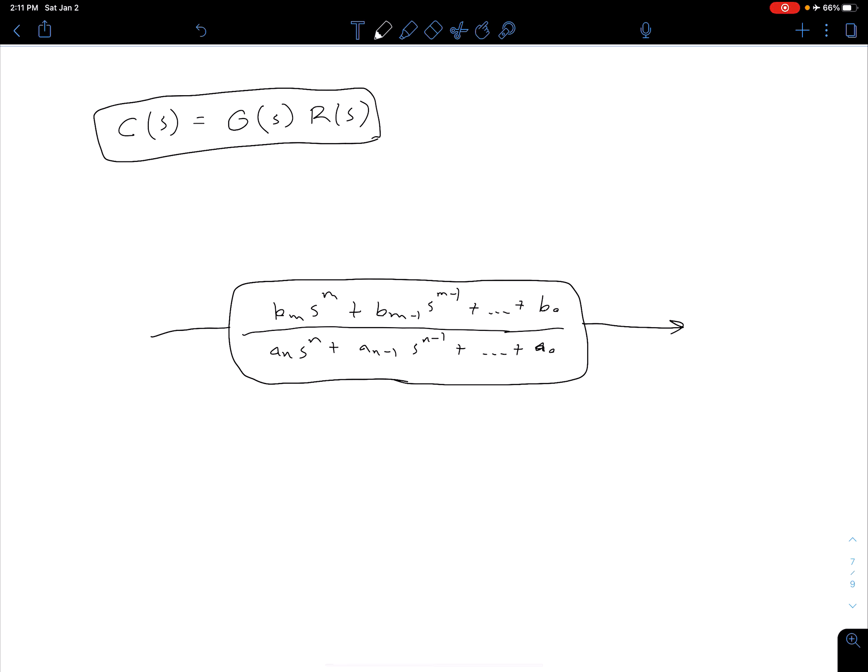On the left side we have our input which is our R(s) and on the right we have our output which is our C(s). And of course we could have a block diagram in the time domain as well—we just have to inverse Laplace transform what's in here.